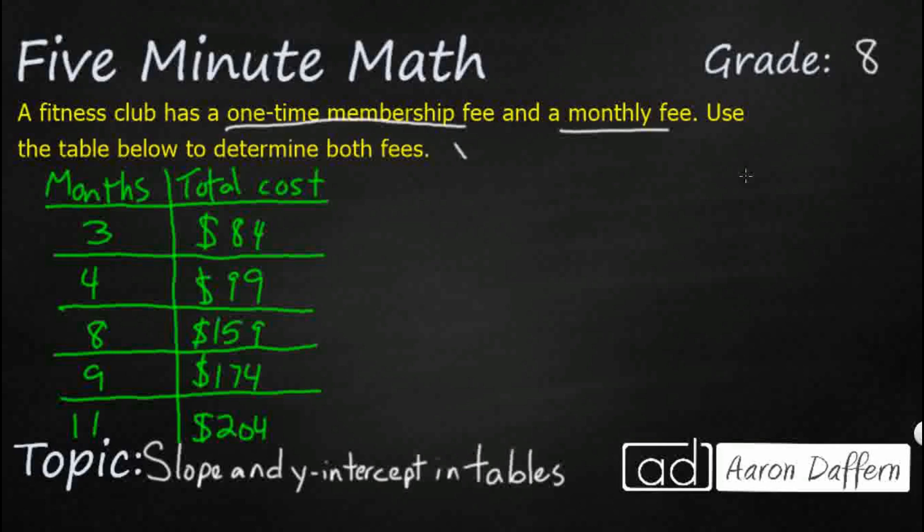You might be thinking, what does this have to do with slope and y-intercept? When we hear slope and y-intercept, we should be thinking of y equals mx plus b. But this is a linear relationship. Look, we've got x's and y's.